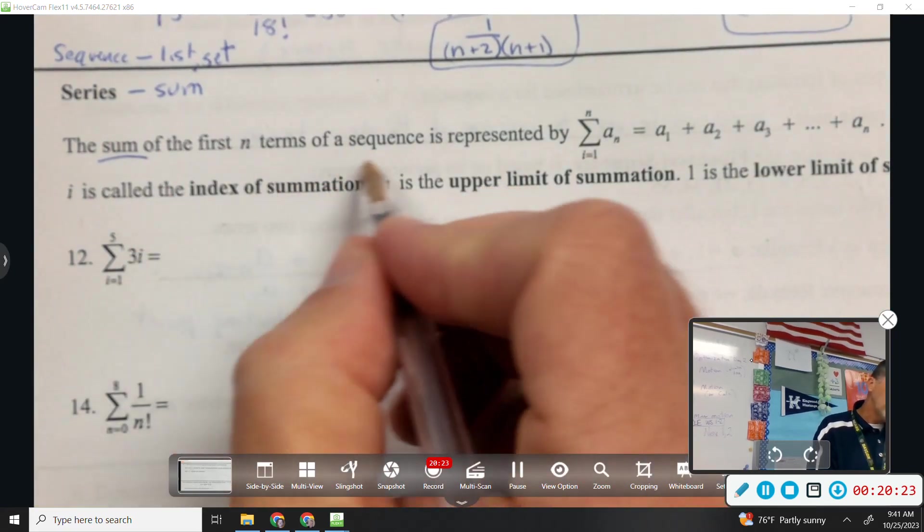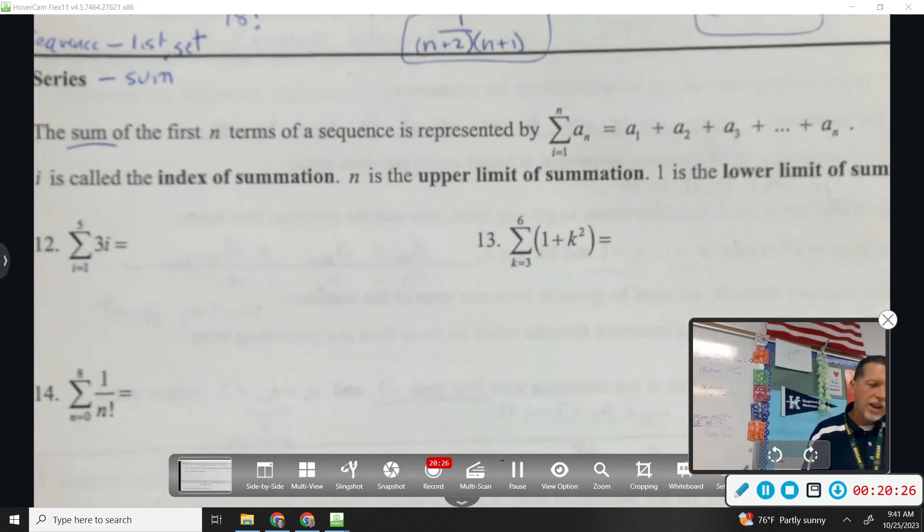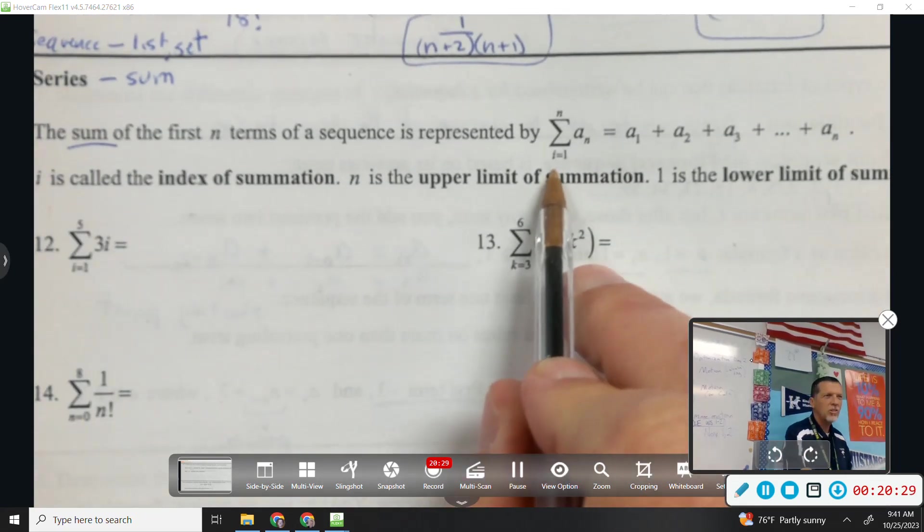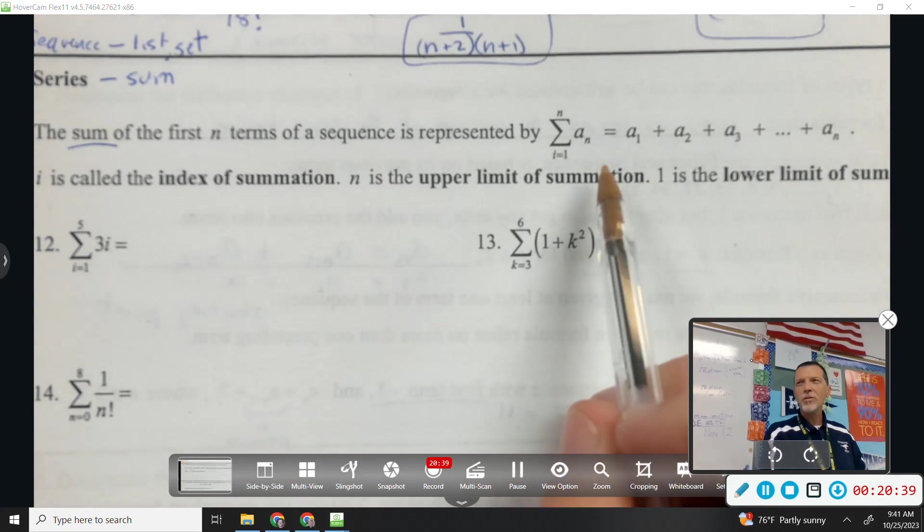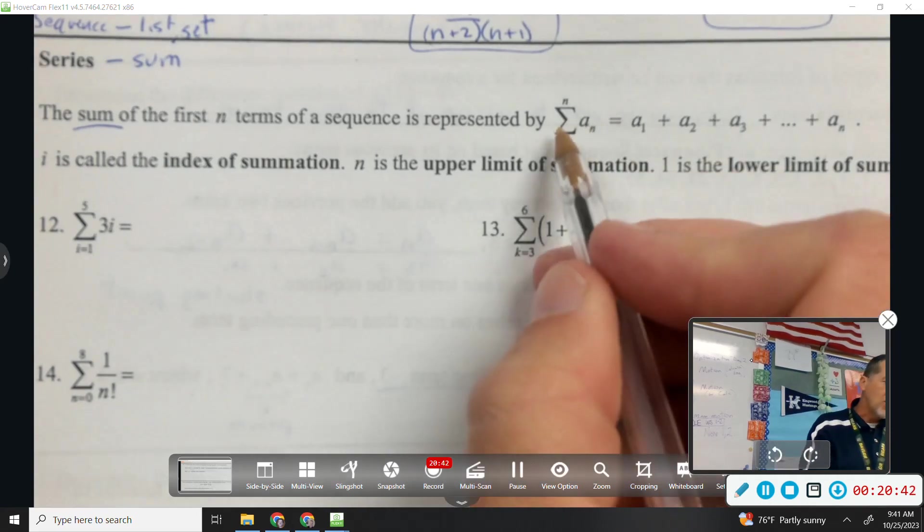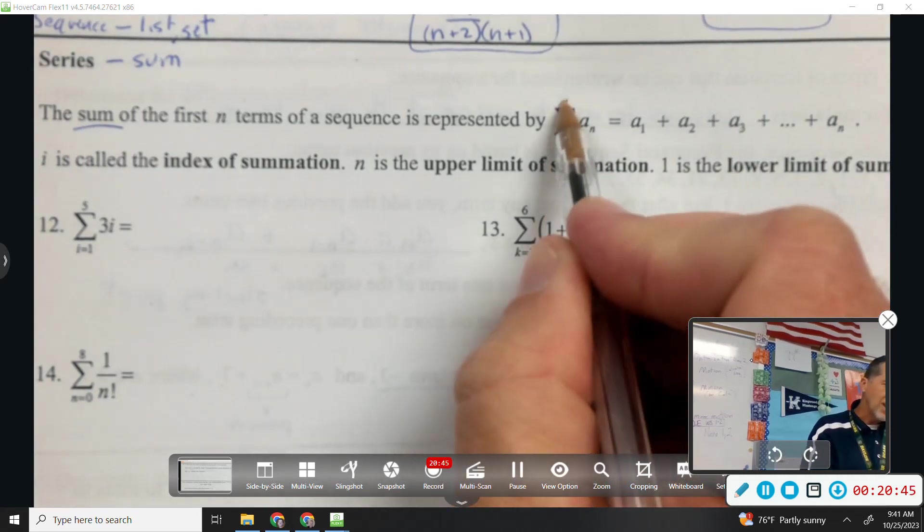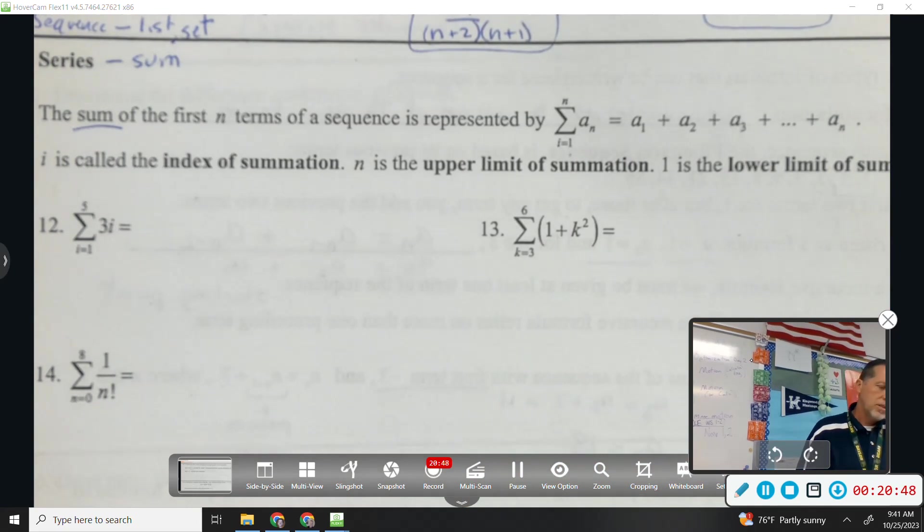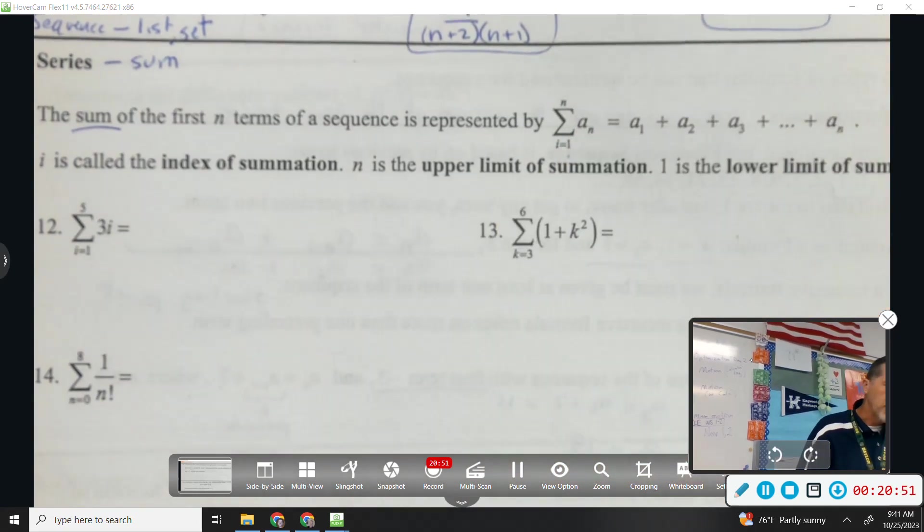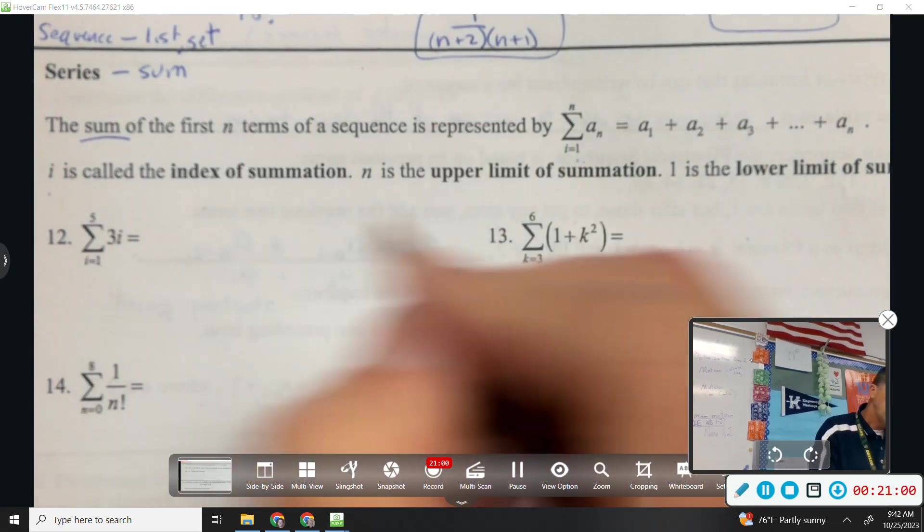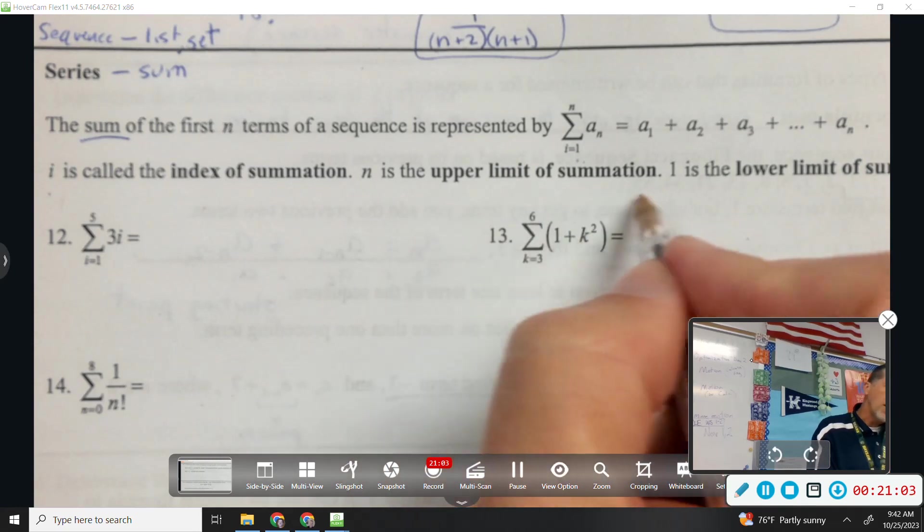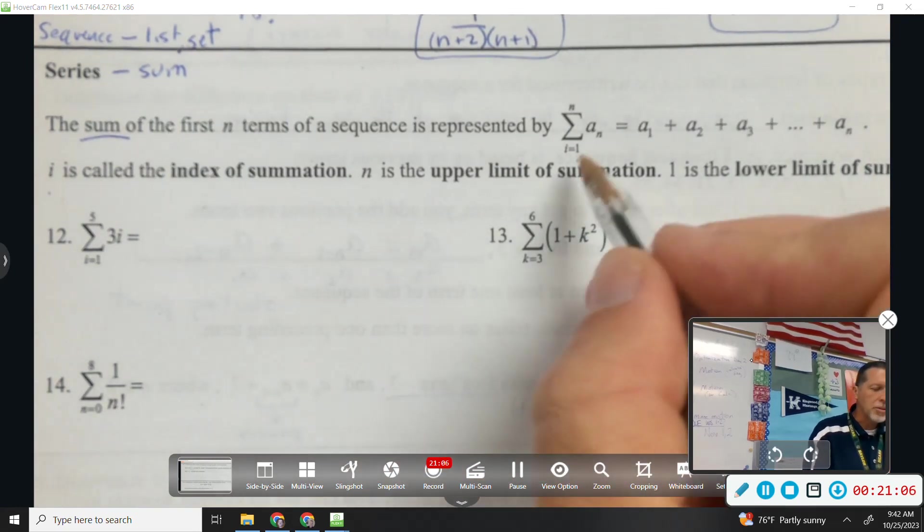The sum of the first n terms of a sequence is represented by this. So have you all seen this before? Sigma notation? It's the sum. That big, that's the Greek letter S for sigma, which means sum. So, yes or no? Have you seen this before? Yes. Okay. So this is the sum starting at 1, going to n of a terms. I don't have room to write all that. Sum starting at 1, going to n of those terms. i is called the index of summation. Very much computer science stuff. n is the upper limit of summation. 1 is the lower limit. So we're going from 1 to n.